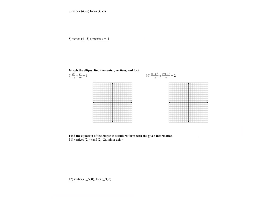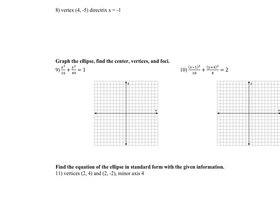Now on the test, in addition to finding center, vertices, and foci, it's also going to ask you to fill in the co-vertices. For the ellipse, remember the bigger number is always your a-squared. So my a-squared is 49, and my b-squared is 16.